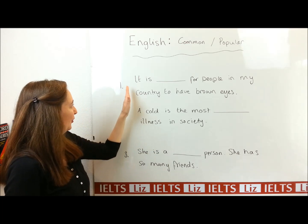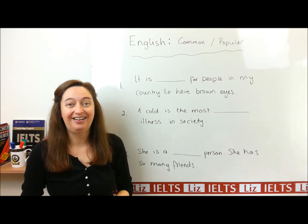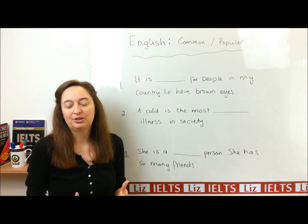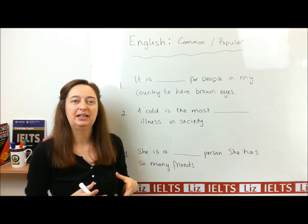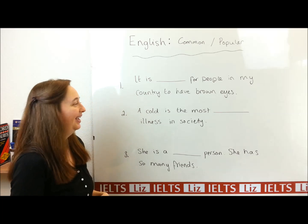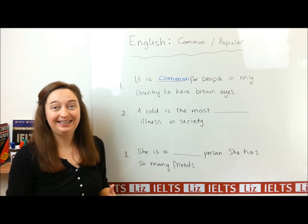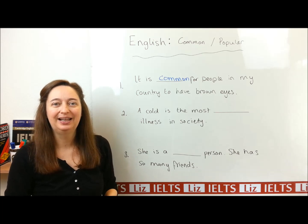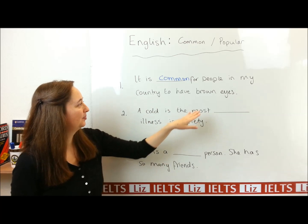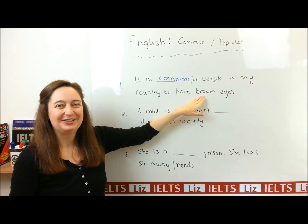Right, let's have a look. The first one: 'It is ___ for people in my country to have brown eyes.' Is this something about popularity — for example, they like it? Or is it about being common because it happens often and it's normal? Well, the answer is common. We don't know if people like having brown eyes, but many people have them. It's normal, it's usual. The answer is common. Of course, in England it's common to have blue eyes, but for many countries it's brown.